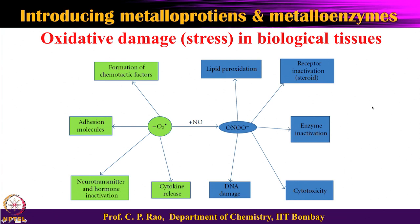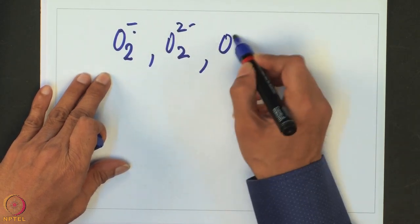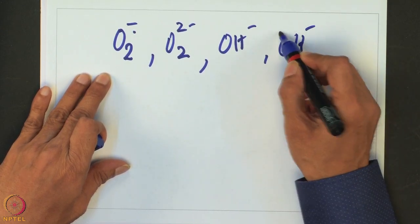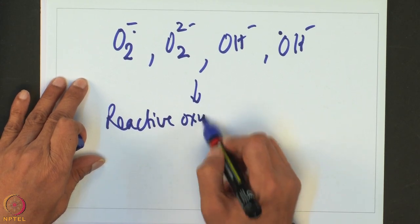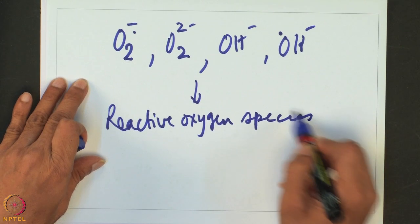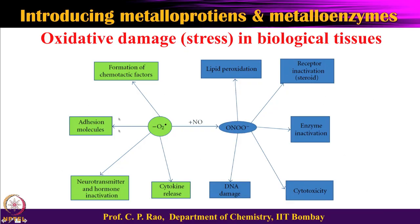All these species are referred to as Reactive Oxygen Species, abbreviated as ROS. ROS includes O2 minus dot, O2 minus, OH minus, and OH dot — all these kinds of species are called reactive oxygen species. ROS causes damage to tissue cells, which is referred to as oxidative stress.